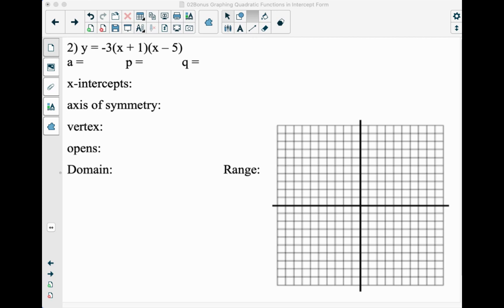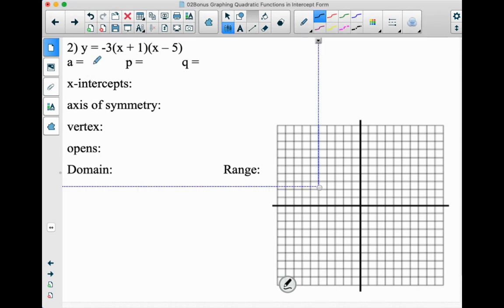Well, isn't this nice? It started off already ready to go for us, all factored out and stuff. Y equals negative 3 times the quantity of X plus 1 times X minus 5. A, we got negative 3, which again, that means it opens downward.